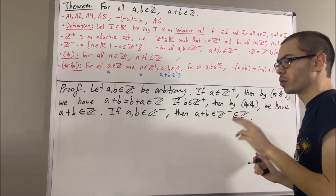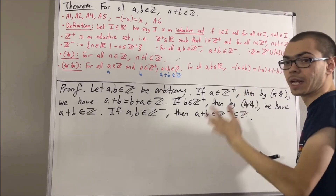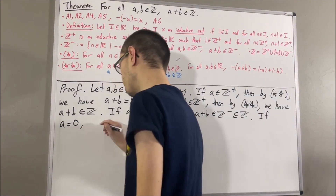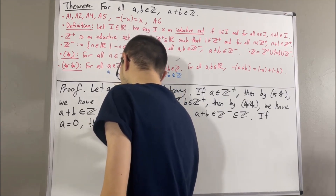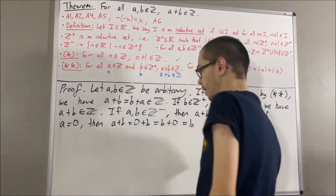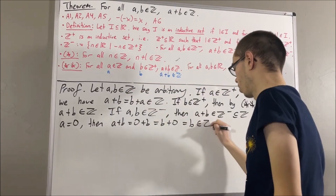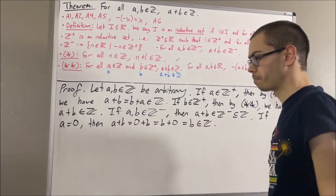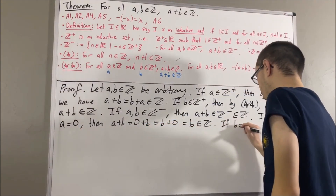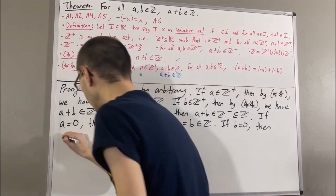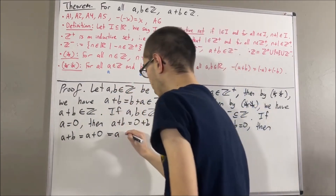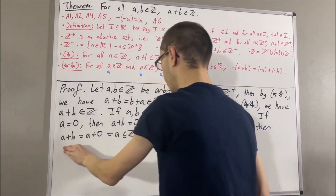There are only two cases left. One case is where a is equal to zero; the other is where b is equal to zero. If a is equal to zero, then a plus b equals zero plus b, which equals b plus zero by the commutative law, which equals b. And b is an integer, so a plus b is an integer. If b is equal to zero, then a plus b is a plus zero, which equals a, and a is an integer. So a plus b is an integer.